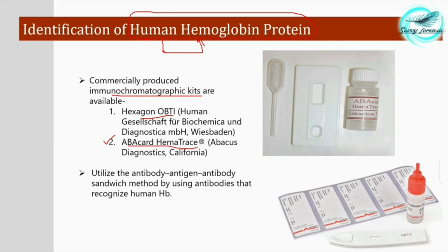Let's see the principle. It works on the principle of utilizing an antibody-antigen-antibody sandwich using antibodies that recognize human hemoglobin. It is a kind of antigen-antibody reaction where a sandwich of antibody-antigen-antibody takes place if the human hemoglobin protein is present in the sample, and it recognizes human hemoglobin only and not any other protein. So it is a highly sensitive and rapid testing kit.